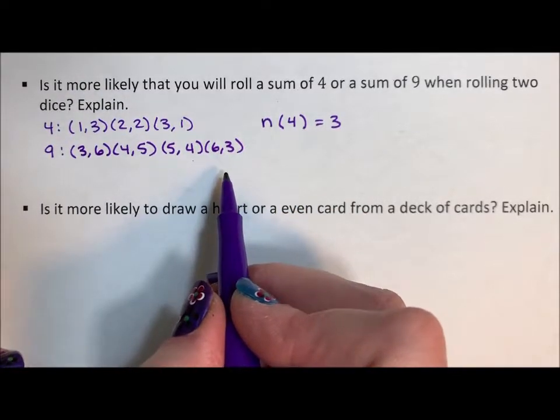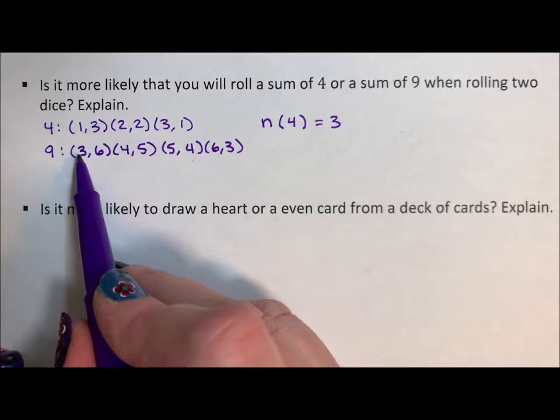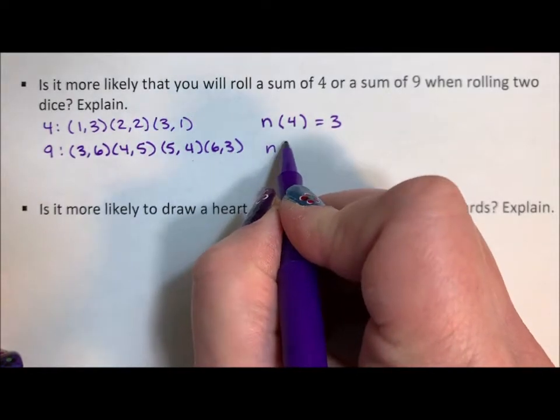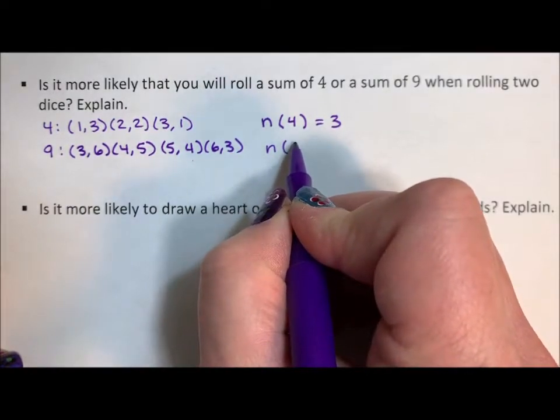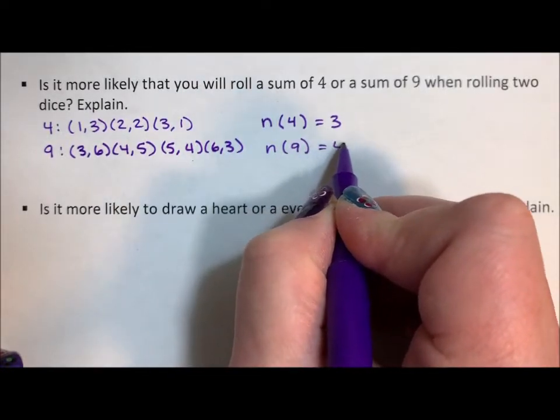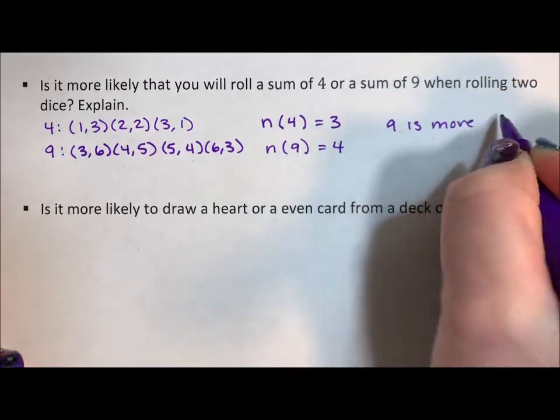Notice how systematically I do this. I don't just throw a dart at this and hope for the best. I start at three and go three, four, five, six, so I'm really systematic. So the number of dice rolls that add up to nine is four. So nine is more likely.